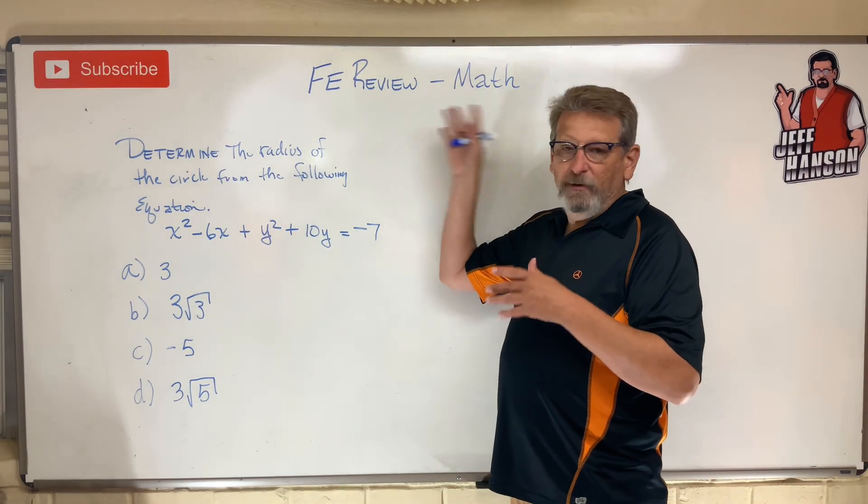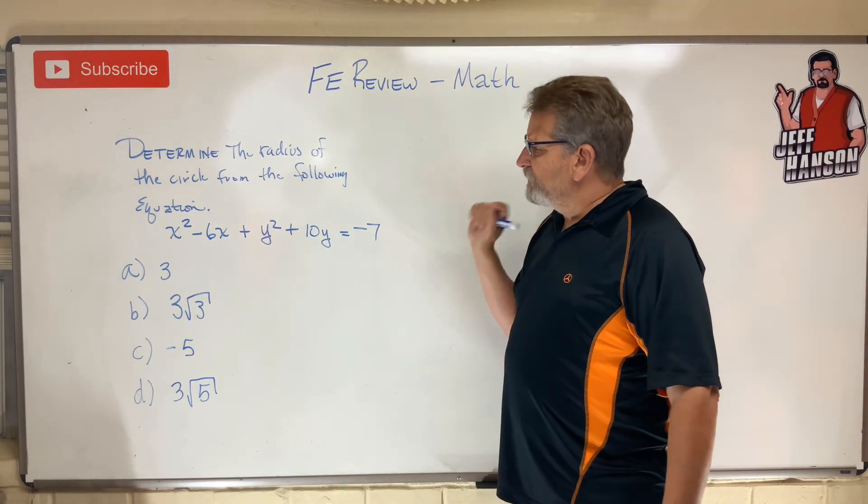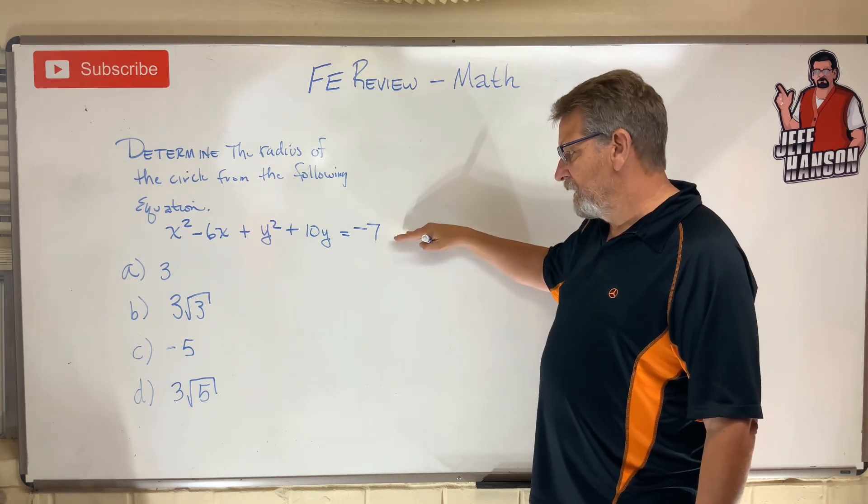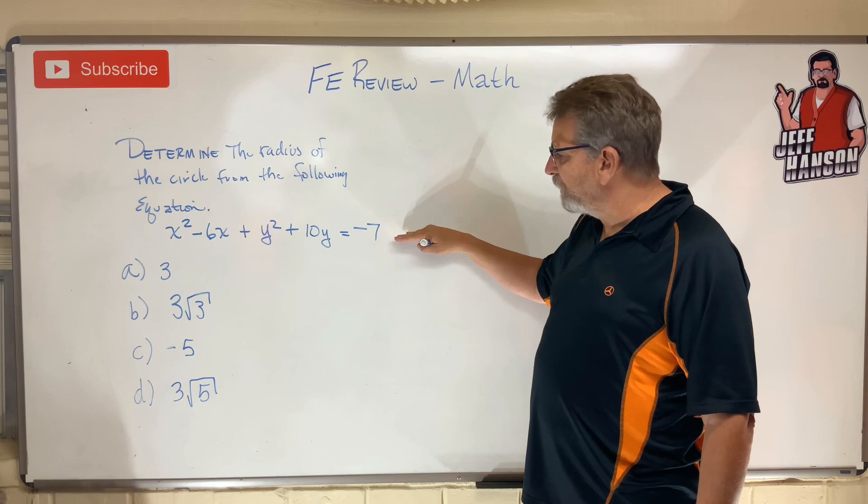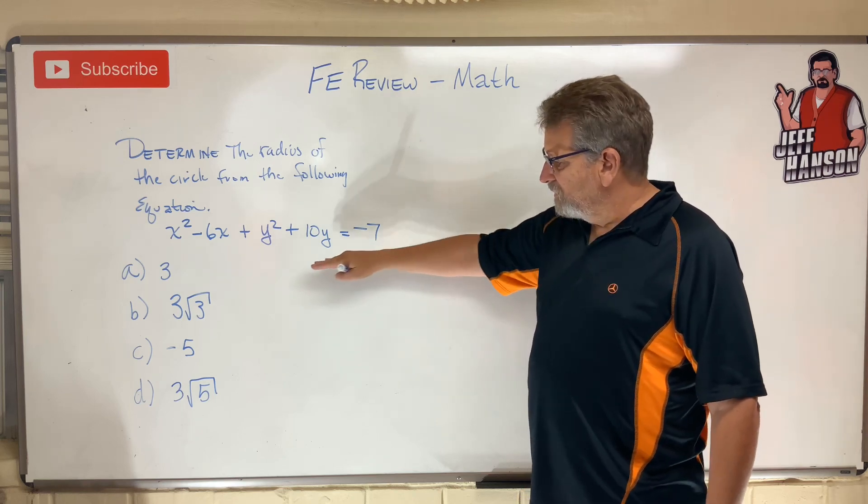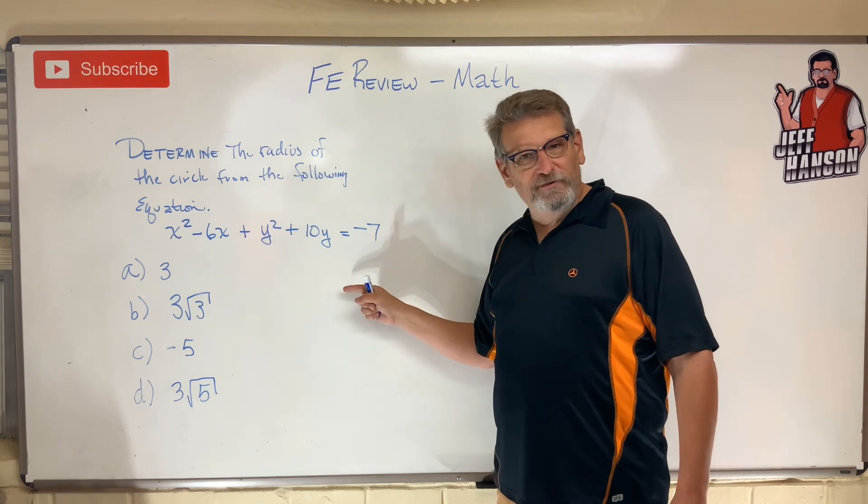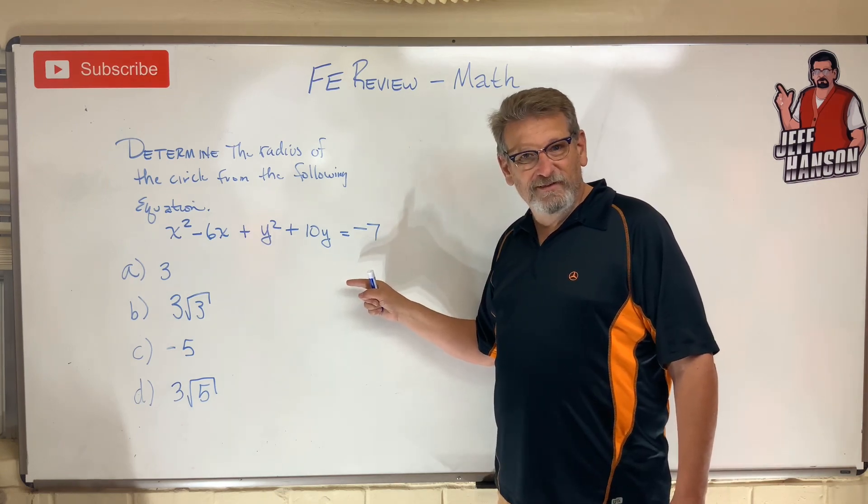Okay, welcome back. FE review problem, Math. Determine the radius of the circle from the following equation: x² - 6x + y² + 10y = -7. If you plot it, it makes a circle. What's the radius? All right, ready, set, go. Press pause.